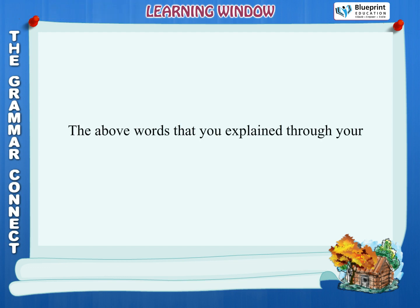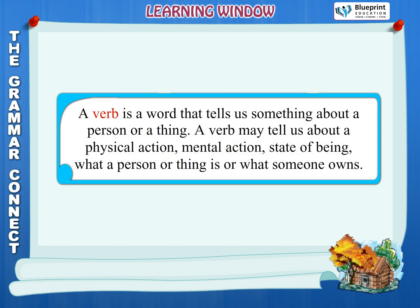The words that you explained through your actions are called verbs. A verb is a word that tells us something about a person or a thing. A verb may tell us about a physical action, mental action, state of being, what a person or thing is, or what someone owns.